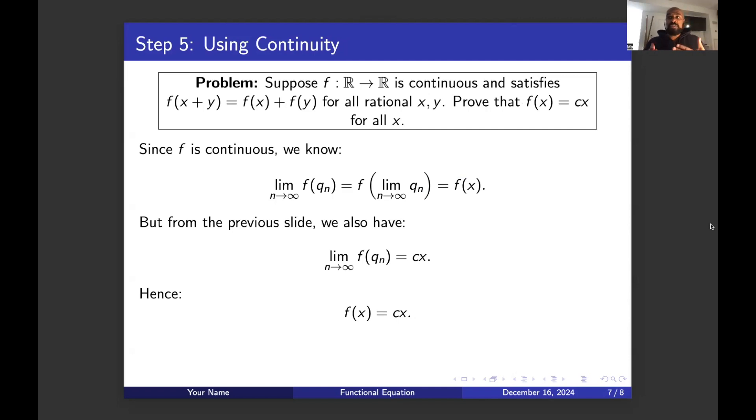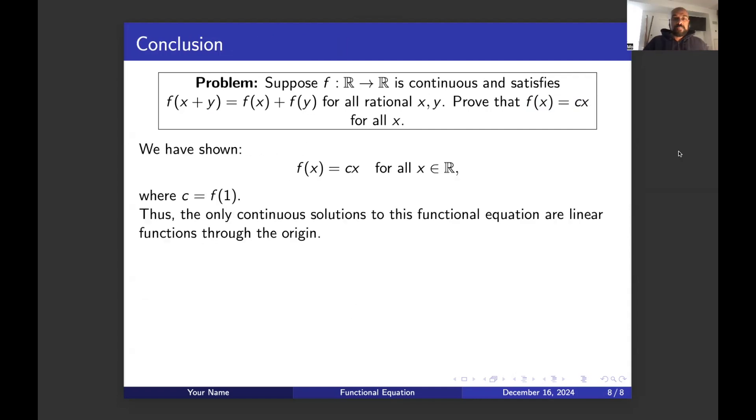So I think this is a really cool problem because you get something interesting on the rationals, but continuity actually lets you extend the linear behavior on the rationals to a linear behavior on all of the real numbers. So we see the only continuous solutions for this functional equation are linear functions that go through the origin. That's what a function like this looks like because it has no plus b term and it's just a constant function with a particular slope.